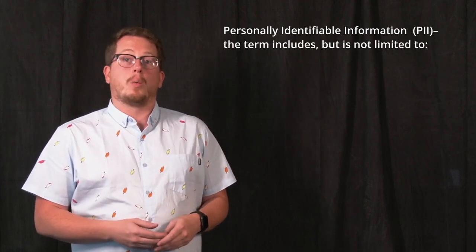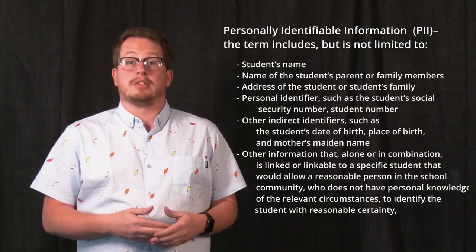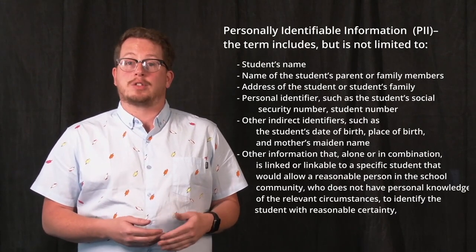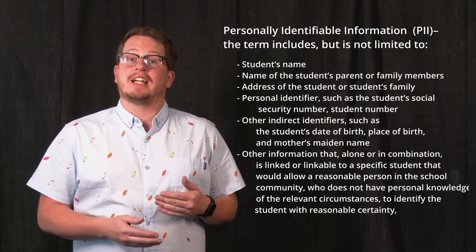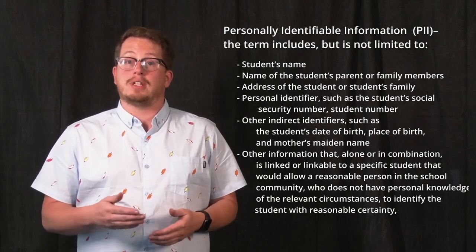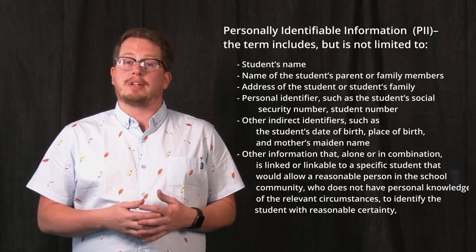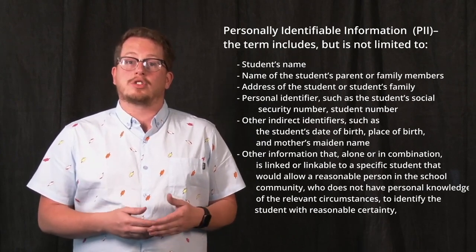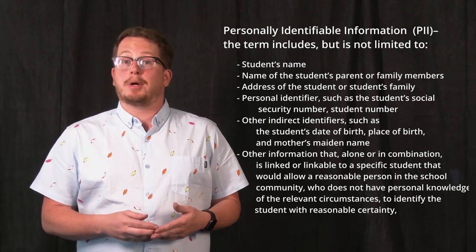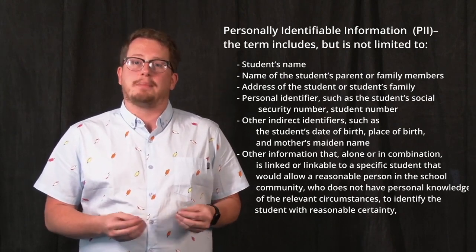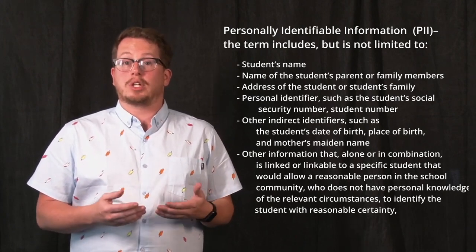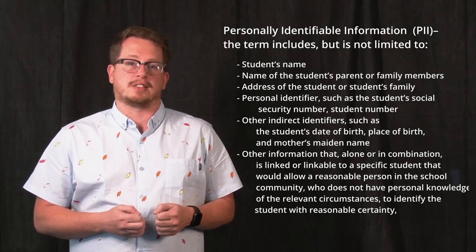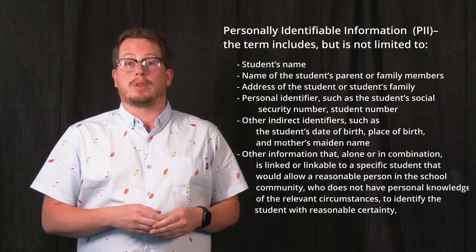So what is this personally identifiable information, or PII? Well, personally identifiable information could be the student's name, the name of their parents or another family member, or the address of a student's family. Things that can identify a student such as a social security number, a student number, CSD docs information, or their biometric record. Other indicators or identifiers such as a date of birth, place of birth, mother's maiden name, or any information that could be linked to a specific student that would allow a reasonable person within the school community who doesn't have personal knowledge of the circumstances to identify that student with reasonable certainty.